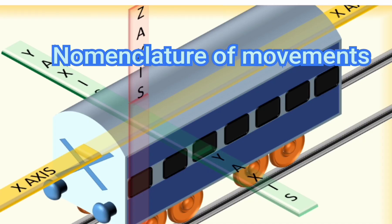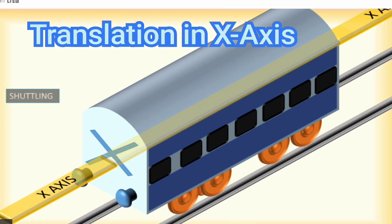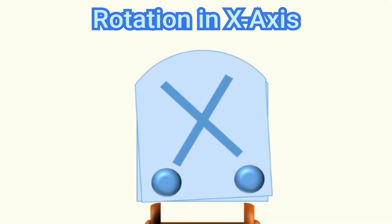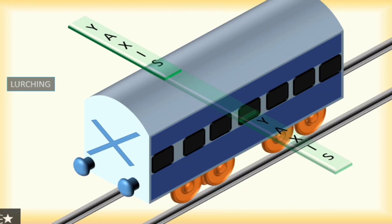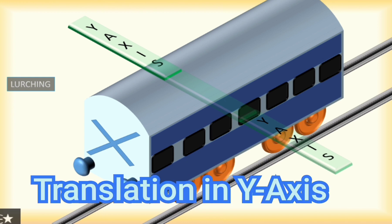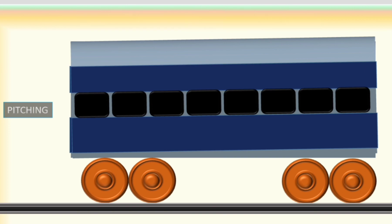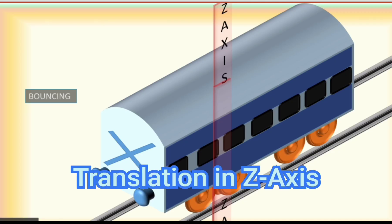Next we can see the normal degrees of movement of vehicles. Translation in the X-axis is shuttling, which may cause shunting. Rotation in the X-axis is rolling. Translation in the Y-axis is surging. Rotation in the Y-axis is pitching. Translation in the Z-axis is bouncing.